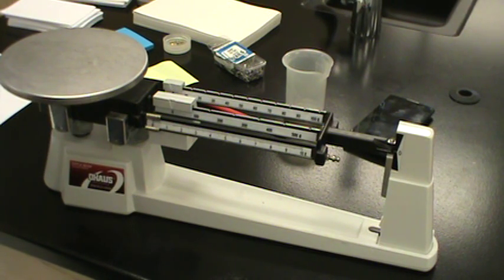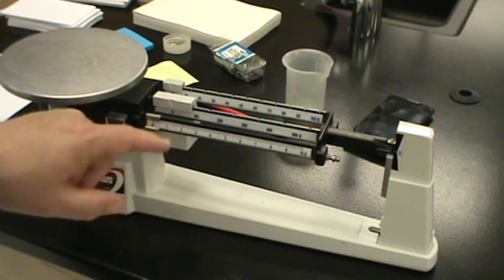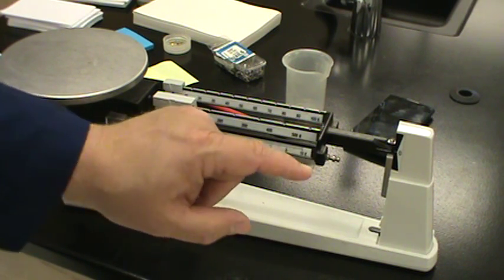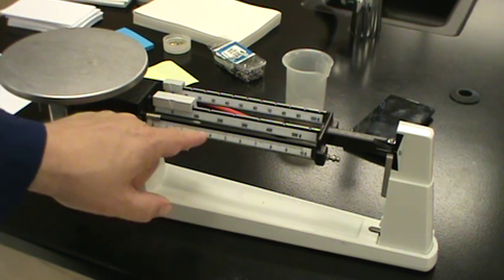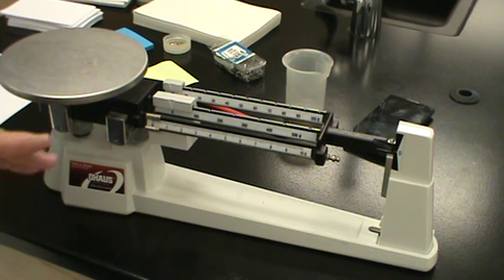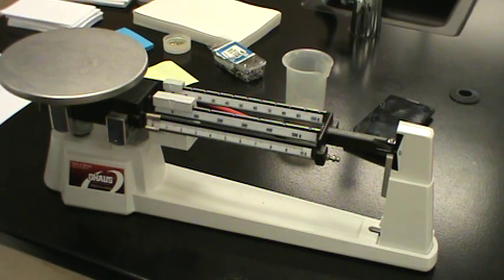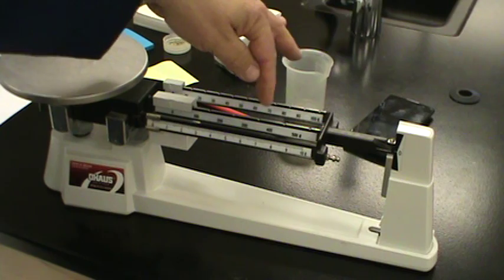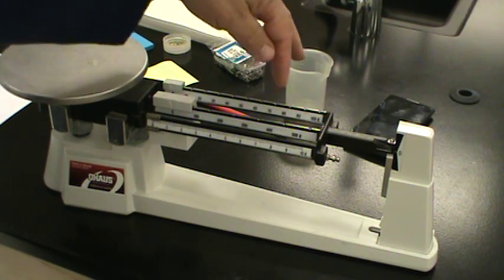The front bar measures single units, in this case single grams, one through ten. There are ten marks in between, so this would be the milligrams that go in there. The middle bar is our heaviest weight measure, this is the hundred grams, and in the back is the tens grams.